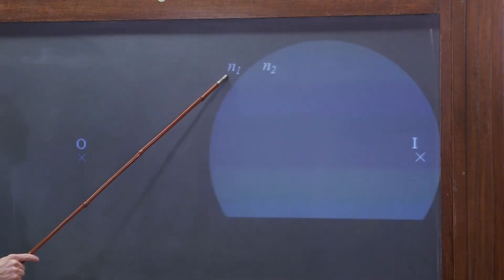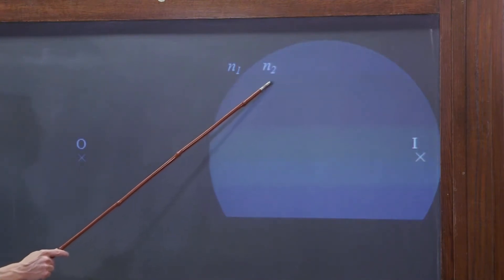Outside, we have index N1, so for air, you could just consider that 1. And inside the sphere, we have index N2, so if it's a glass sphere, that's 1.5.